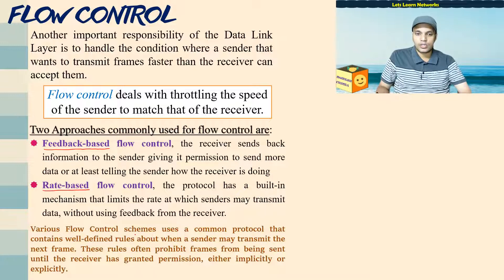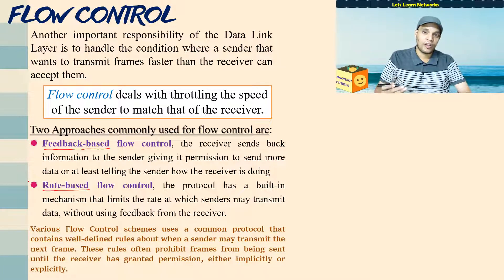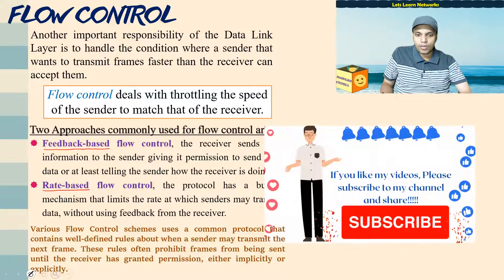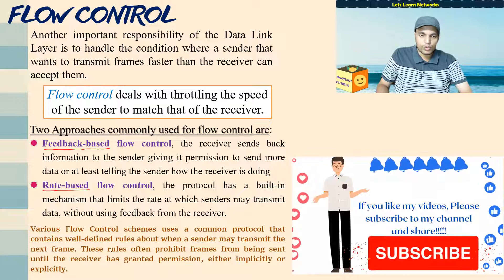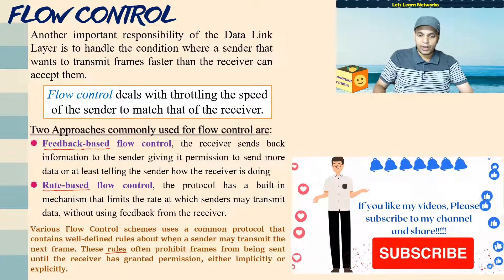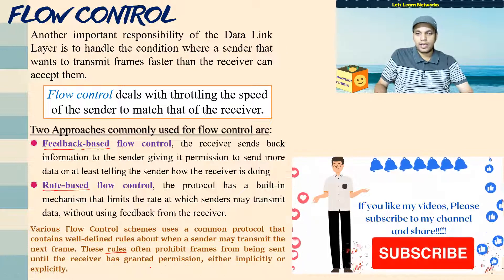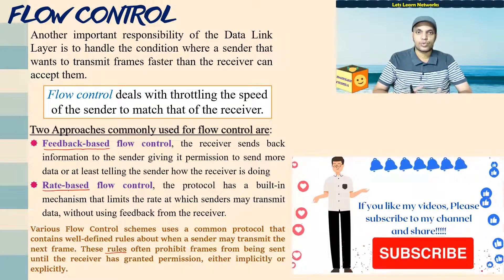In rate-based flow control, the protocol automatically looks at queues, packet losses, packet drops, and other parameters to determine that the receiver cannot keep up with the sender's speed, and automatically reduces the sender's rate. Various flow control schemes use a common protocol with well-defined rules about when a sender may transmit the next frame. These rules often prohibit frames from being sent until the receiver has granted permission — either implicitly or explicitly.